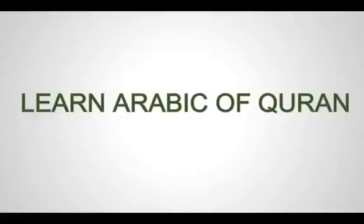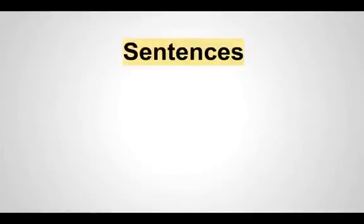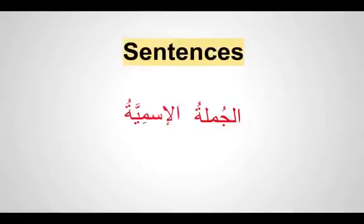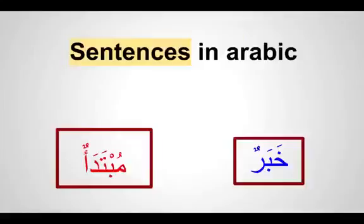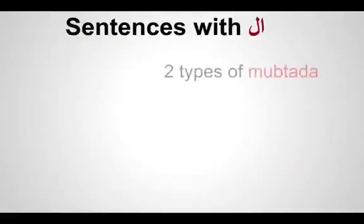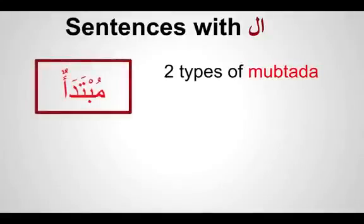Welcome back. Alhamdulillah, we're slowly learning more about sentences in Arabic. Just to revise what we're doing so everybody is on board: we're doing jumlat al-ismiyyah. We've learned so far in jumlat al-ismiyyah we have muptada and khabar. Muptada is the beginning of a sentence — it is an ism — and we have learned there are about eight types of muptada; so far we've done about two types.